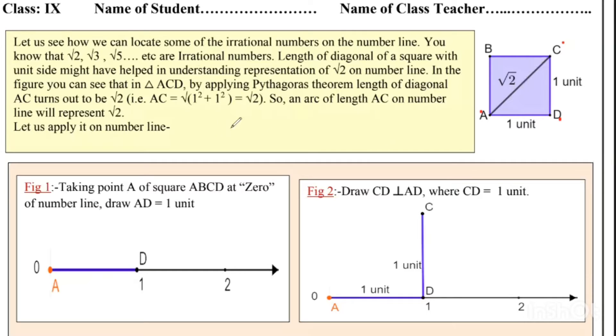So taking an arc of length AC on the number line, we can represent √2. With the help of a compass, we take this arc and mark it on the number line.